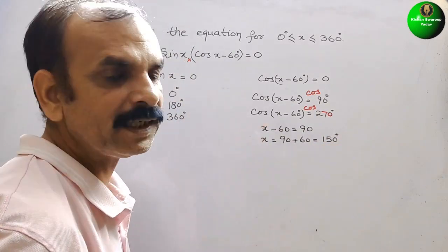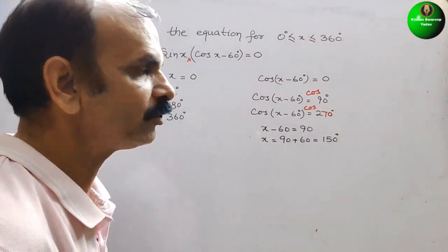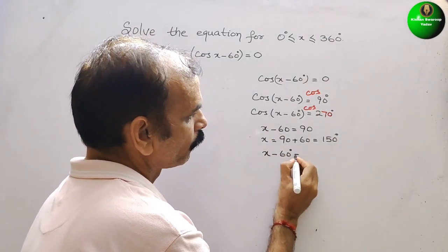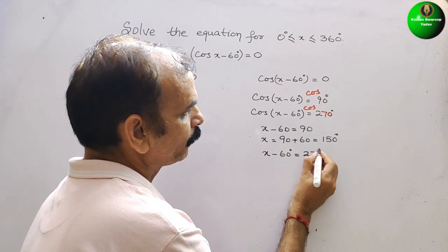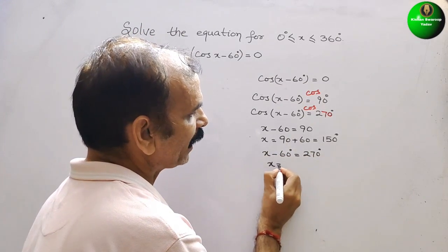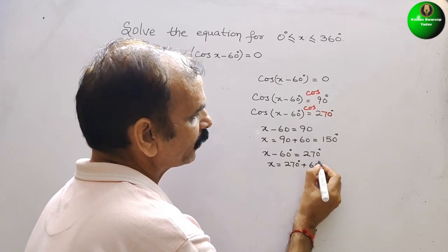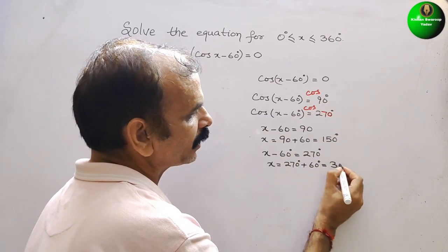And second one, x - 60 is equal to 270. So now we will get x is equal to 270 degree plus 60 degree, that is equal to 330 degree.